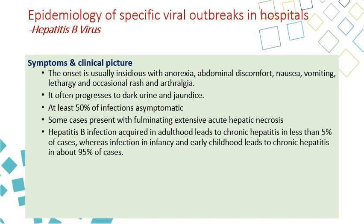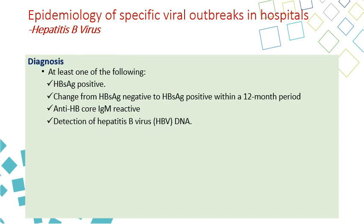Hepatitis B can become a chronic disease. This happens in 5% of cases that develop in adult patients, but in 95% of cases that develop in infancy and early childhood. For diagnosis of hepatitis B, you need to detect hepatitis B S-antigen, seroconversion from hepatitis B S-antigen negative to positive within 12 weeks, anti-hepatitis B core immunoglobulin M, and detection of hepatitis B DNA.